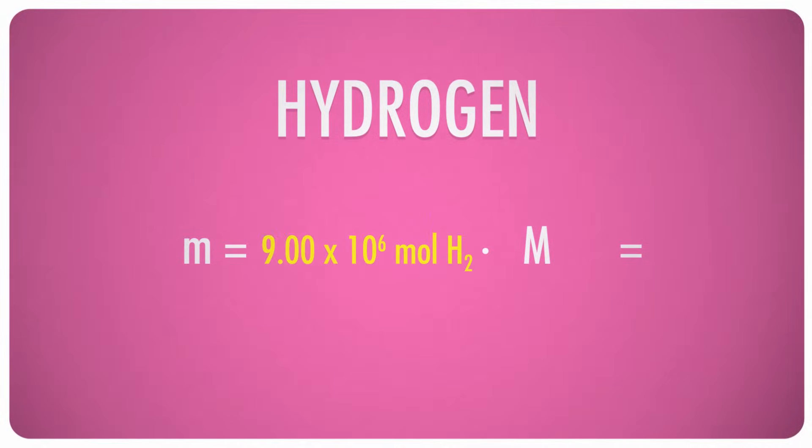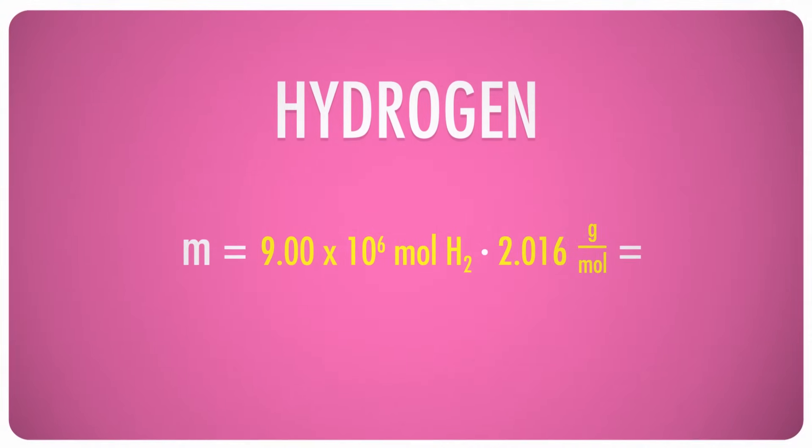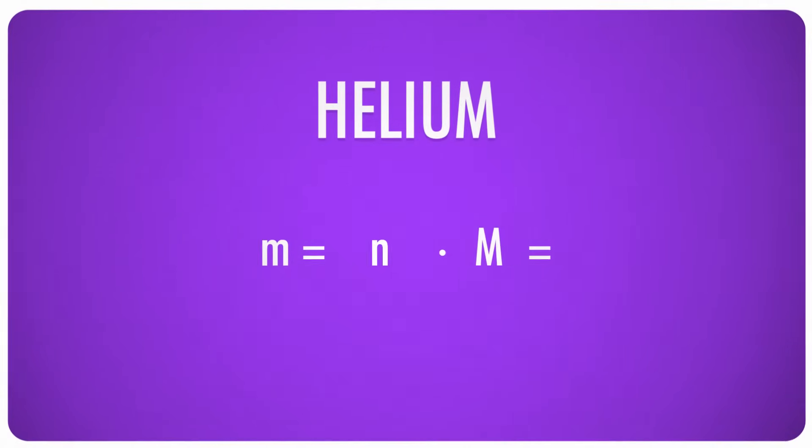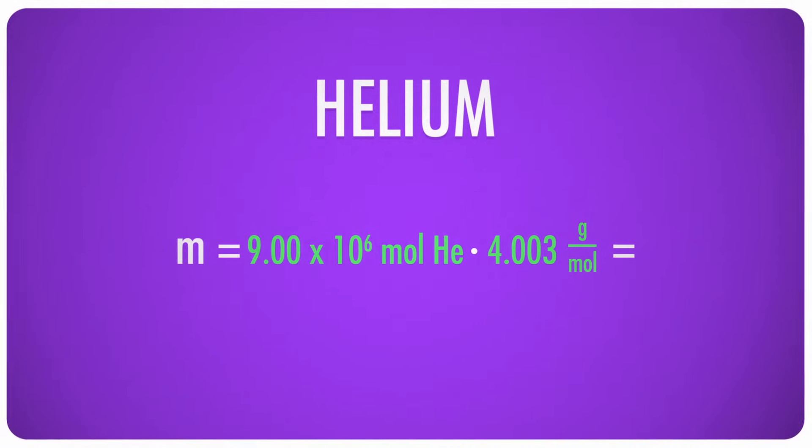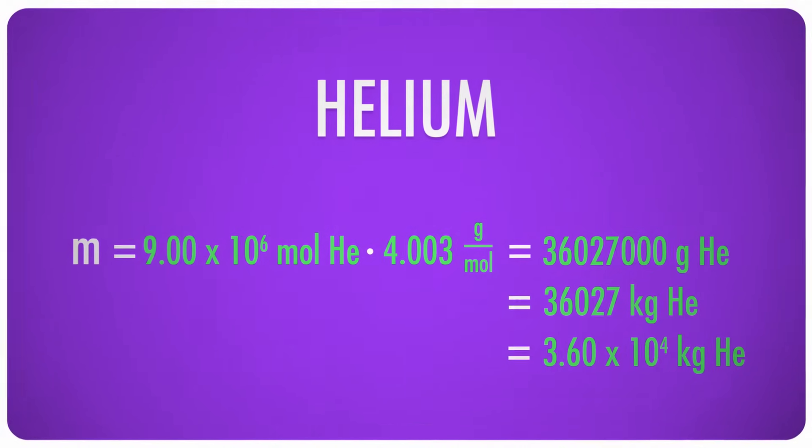So how much extra could the Hindenburg carry because it was using hydrogen instead of helium? 9 million moles of H2 times its molar mass, 2.016 grams per mole, calculates to a little over 18,000 kilograms, or 18 metric tons of gas. On the other hand, helium's molar mass is 4.003 grams per mole. So if they had used 9 million moles of that, the gas would have had a total molar mass of over 36,000 kilograms. So with hydrogen instead of helium, the Hindenburg can carry 18 metric tons more.